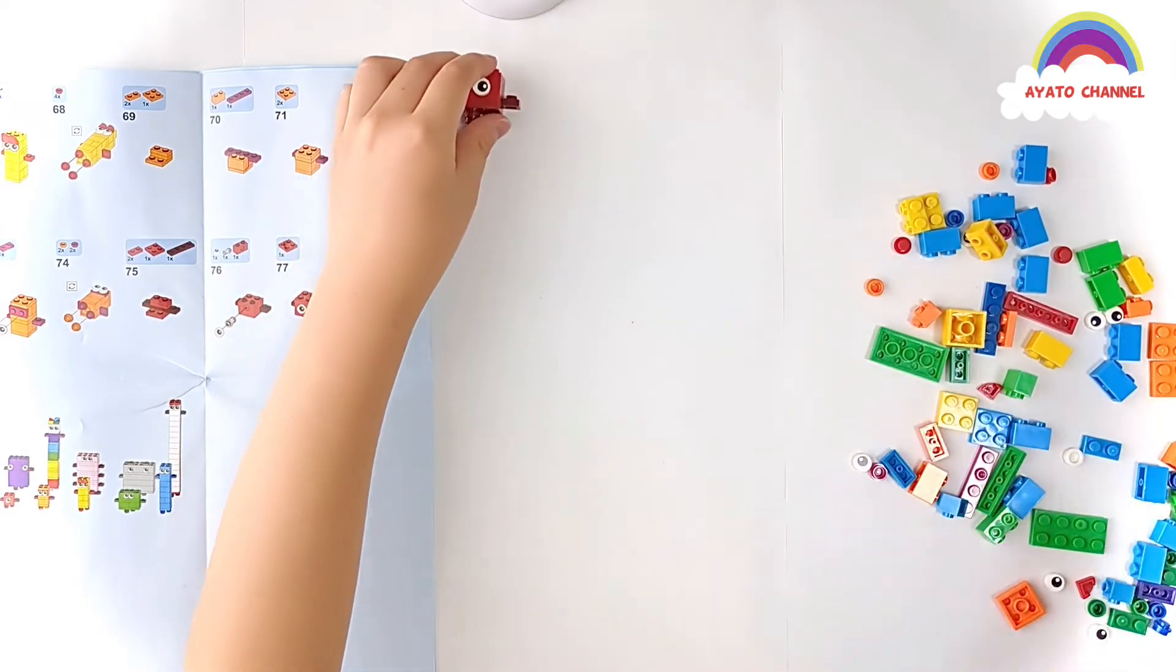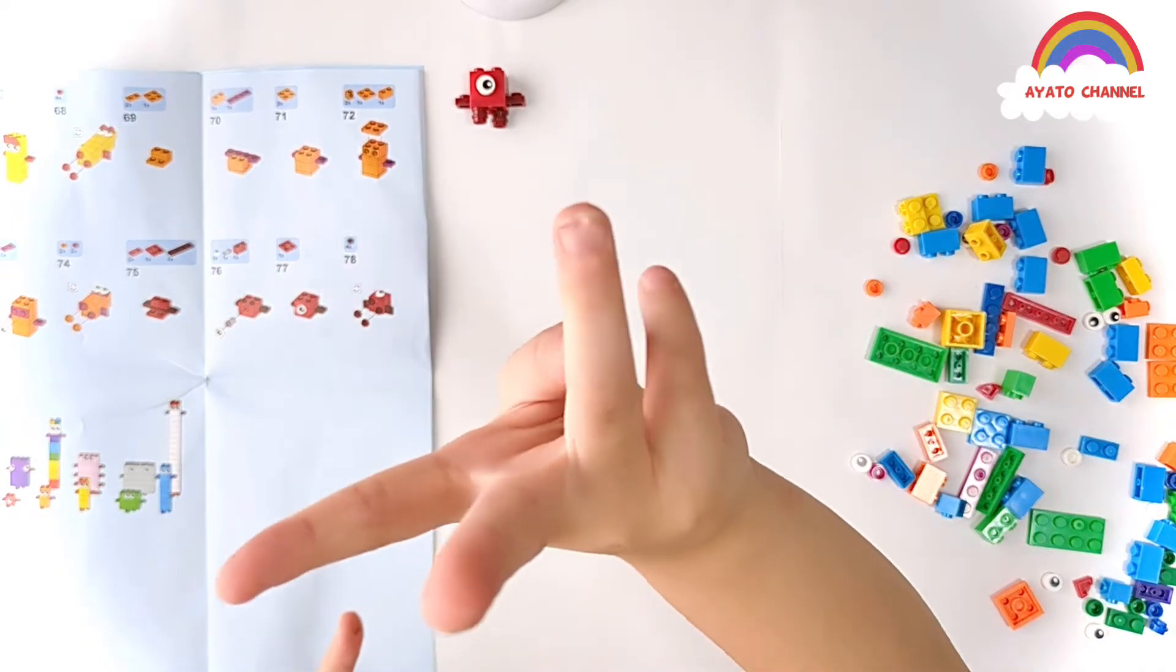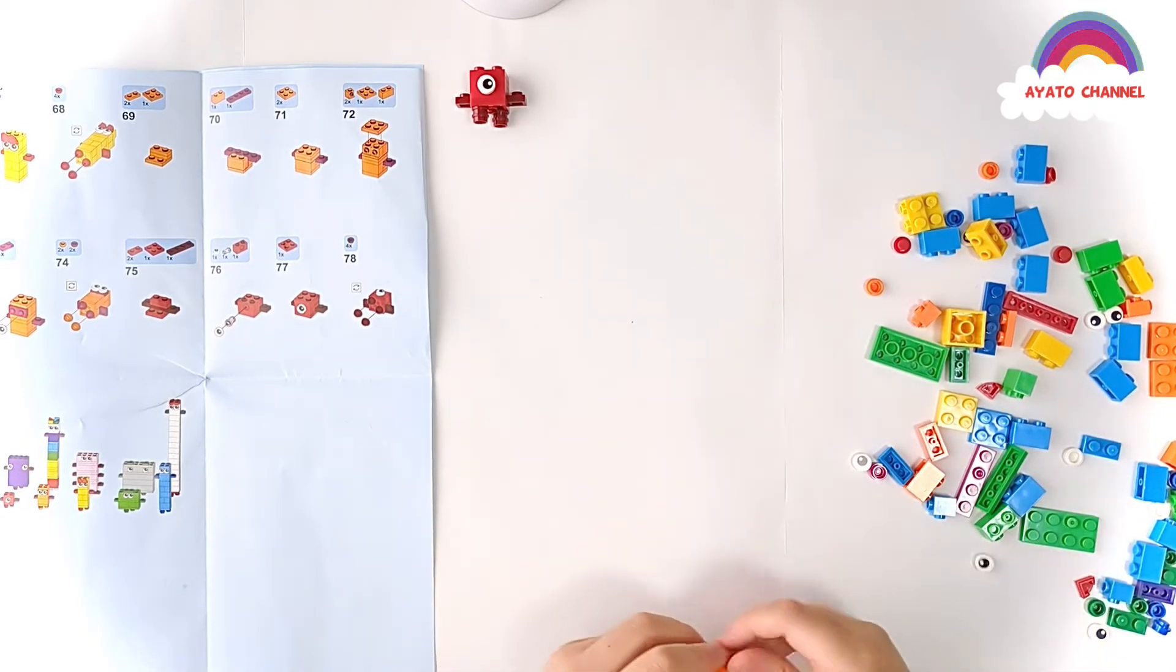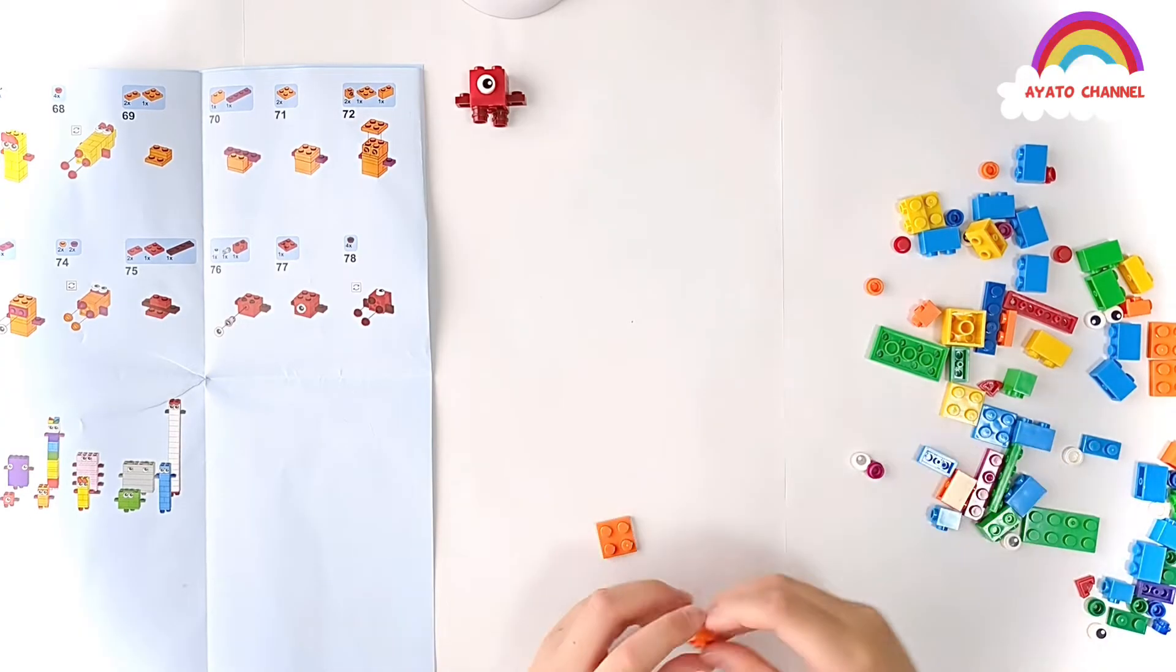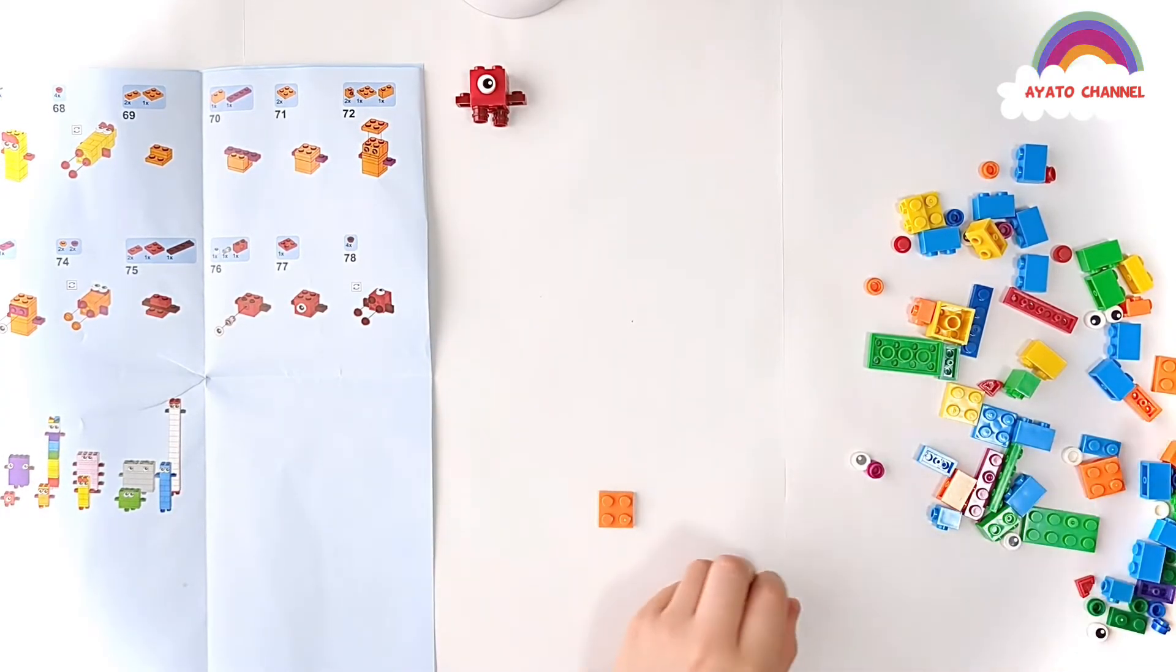And guys, then next I will make the number two. So let's make it. Two is made up of two orange blocks like this! So I will put together.